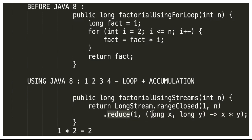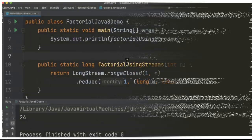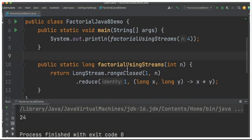The reduce method starts with 1 and then keeps moving to the next number coming out of LongStream. For example: start with 1, multiply by 2 to get 2, then go to the next number, multiply again, and so on, until we get the final result.